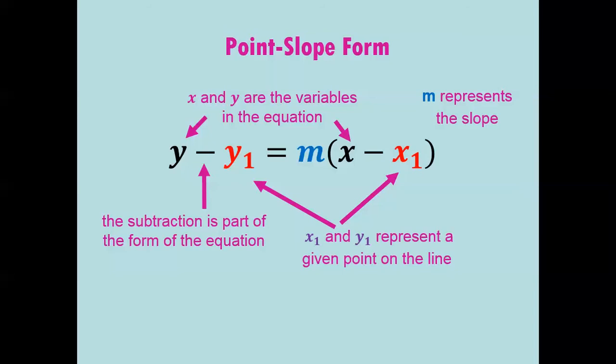Notice that the subtraction is part of the form of the equation. So if y1 is a positive number, we're going to have y minus that number. If y1 is a negative number, it's going to be y minus that negative number, which ends up being positive.